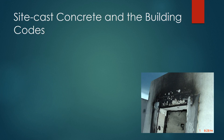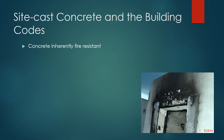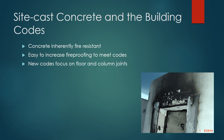Site-cast concrete and building codes: concrete is inherently fire resistant, meeting a lot of building codes. Usually concrete is adequate enough to classify as type 1. In buildings with higher fire resistance standards, slabs can either be thickened or have fireproof material applied to the lower surfaces of floors. Some newer building codes are focused on the strength of joints between floors and columns to resist seismic loads.